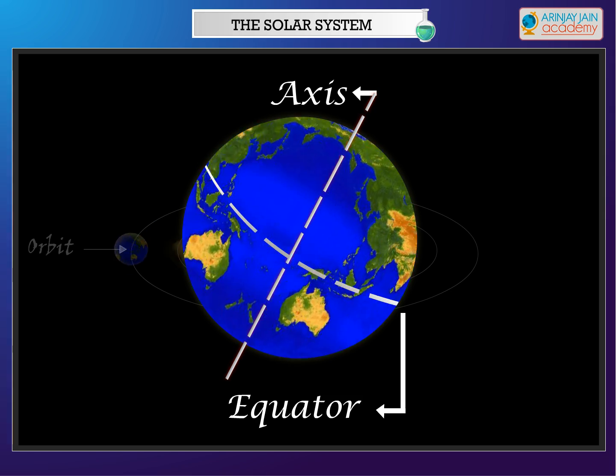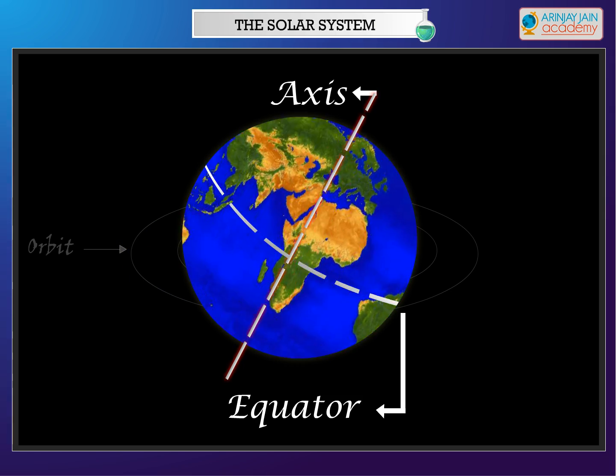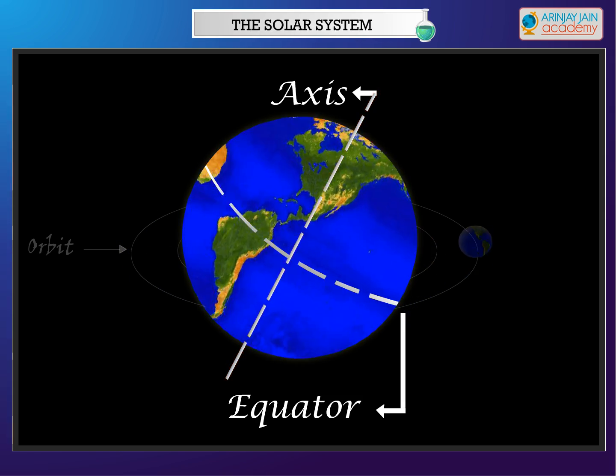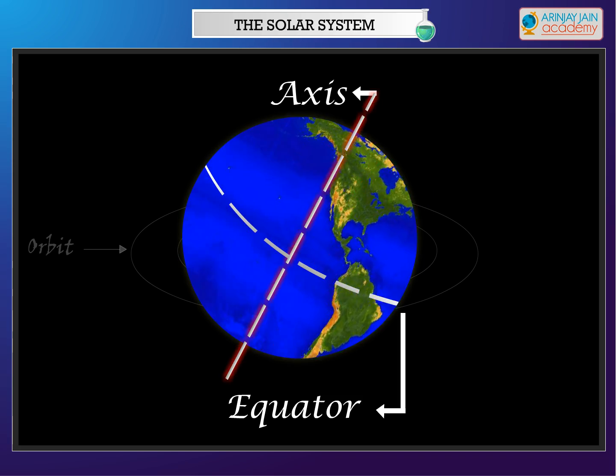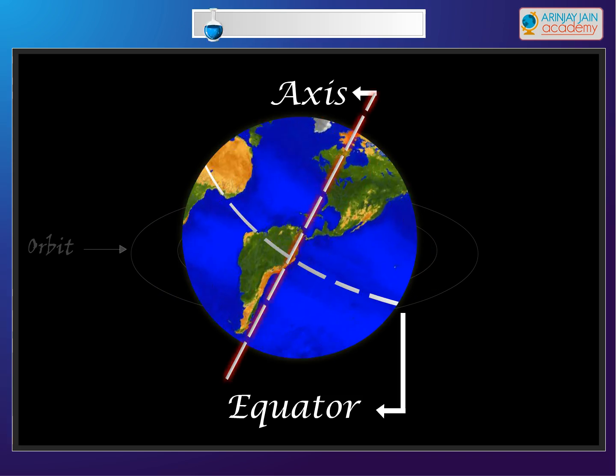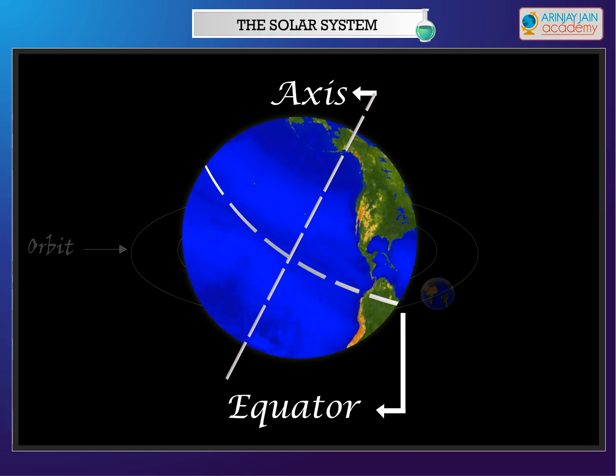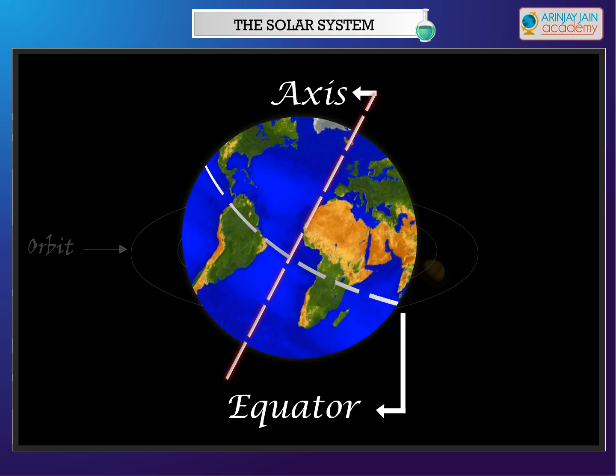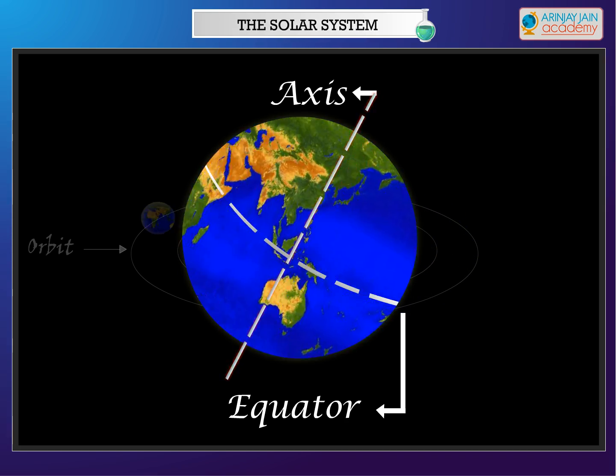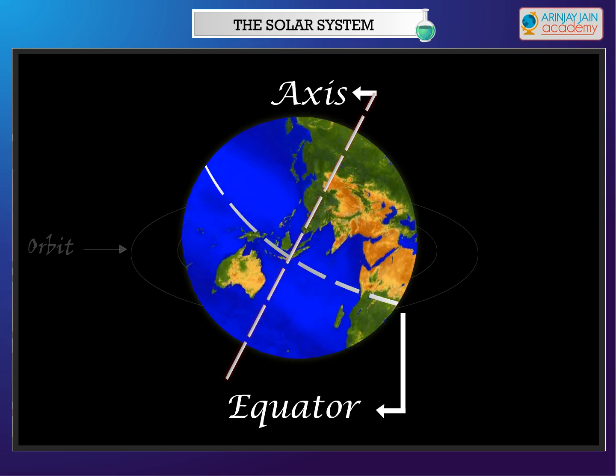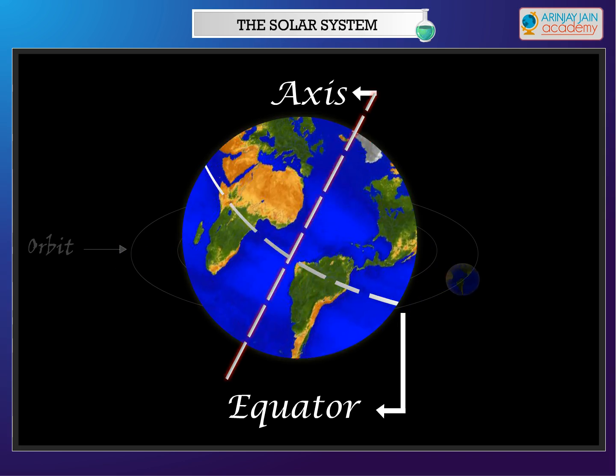As the axis of the Earth is not straight during revolution, either the North Pole or the South Pole gets tilted towards the sun. When the North Pole tilts towards the sun, the Northern Hemisphere receives more sunlight and has summer. The South Pole remains tilted away from the sun and receives less sunlight.